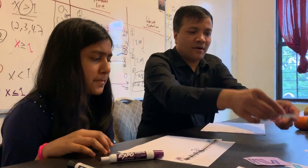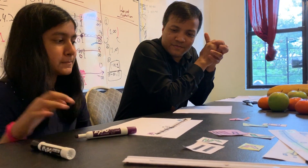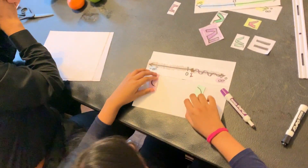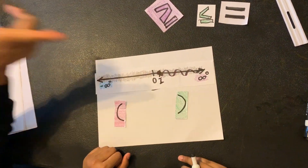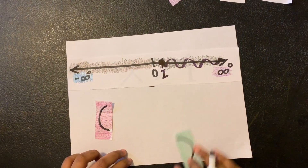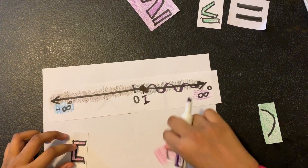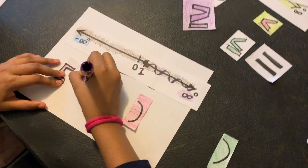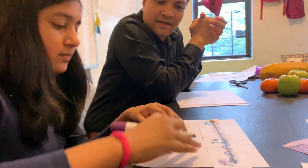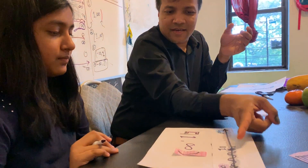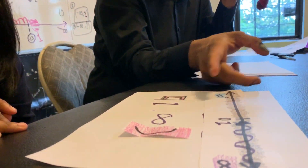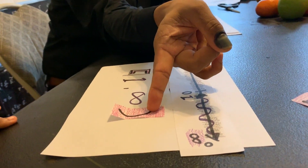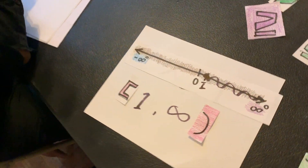This is wrong because this is a closed circle, so be careful. This is good — one comma infinity. Very nice. This is a closed circle, so this must be a bracket. Infinity is always open, so this must be parentheses. Very good, you are doing okay.